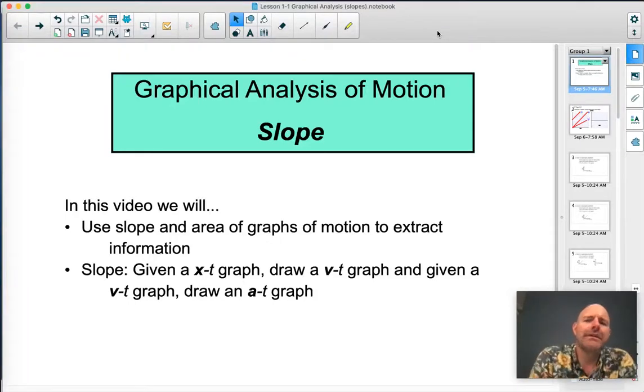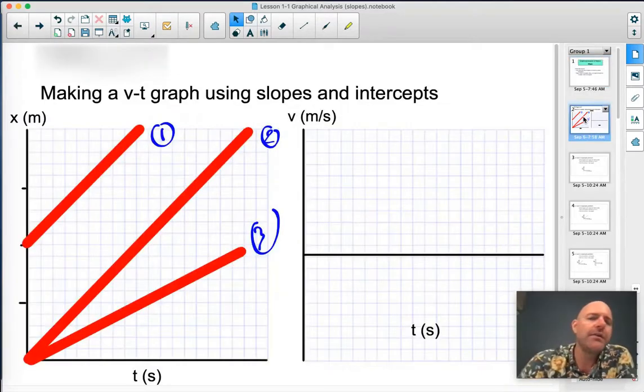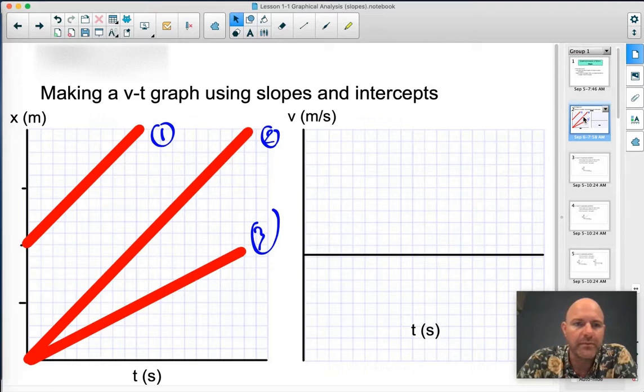Hi, AP Physics. In this video, we're going to look at how we interpret graphs, specifically by looking at the slope of those graphs. So, jumping in, if you have homework packet 1, page 9, problem number 1, you'll see something that looks a lot like this.